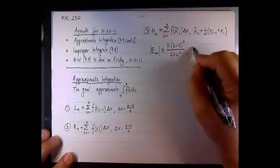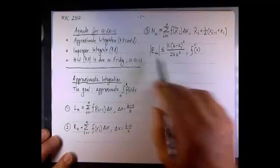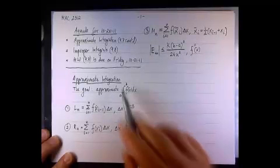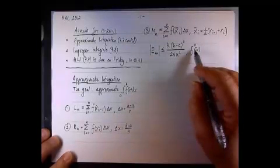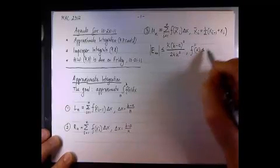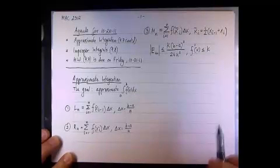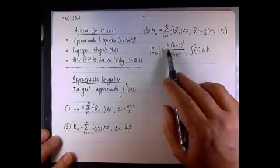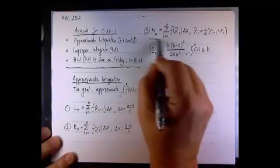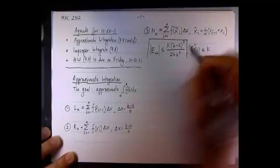How do we get to k? K will be the upper or biggest possible value for the second derivative of x. Over the interval from a to b, we're going to check to see what is the biggest value of f double prime, and we take that value and say this will be k, and it will be in the numerator.